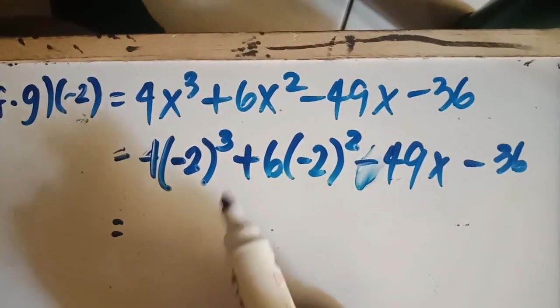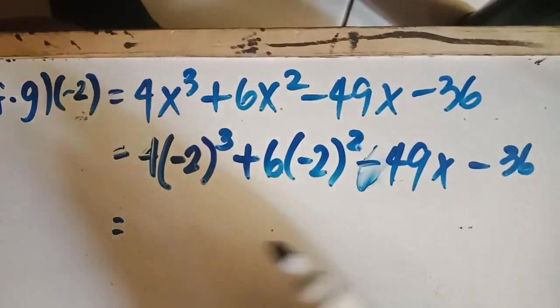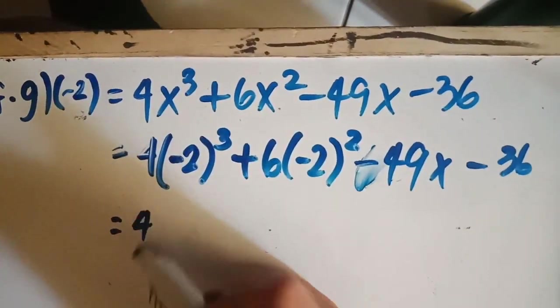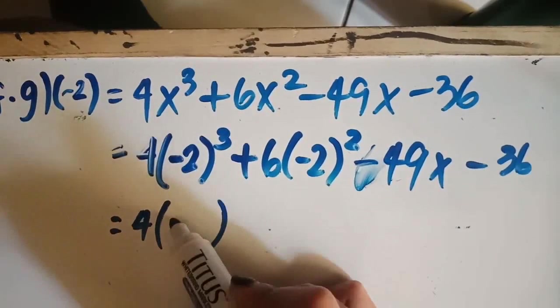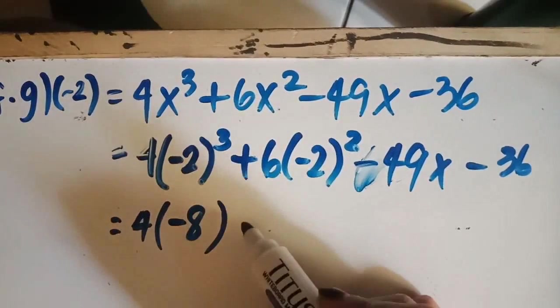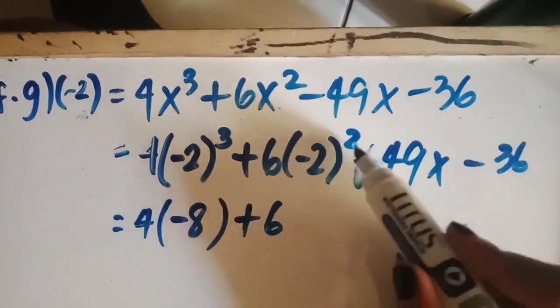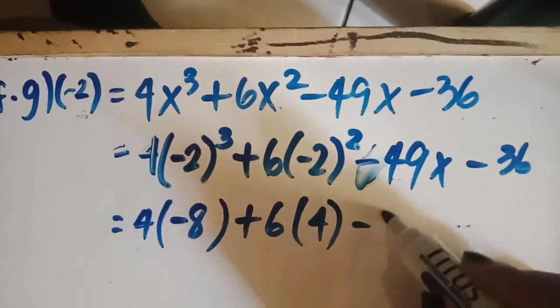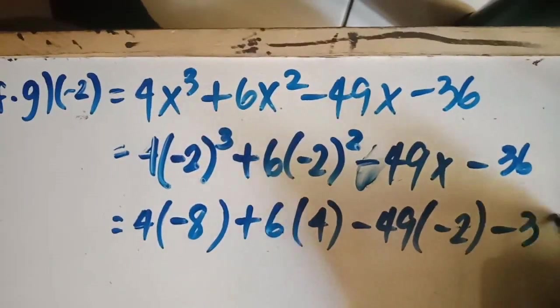Again, since we have multiple operations, please consider PEMDAS. So we have exponent first, so negative 2 cubed, that is negative 8. In this case, we have plus 6, negative 2 squared, that is positive 4, minus 49 times negative 2, minus 36.